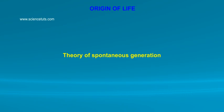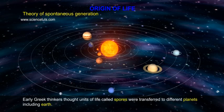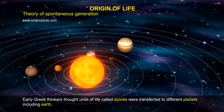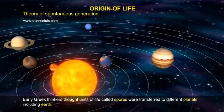Theory of spontaneous generation. Early Greek thinkers thought units of life called spores were transferred to different planets including Earth.